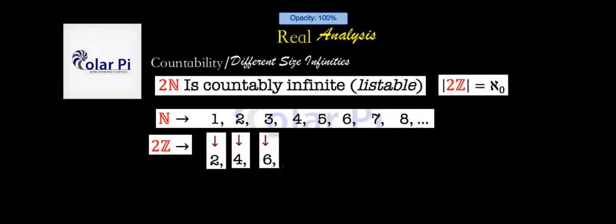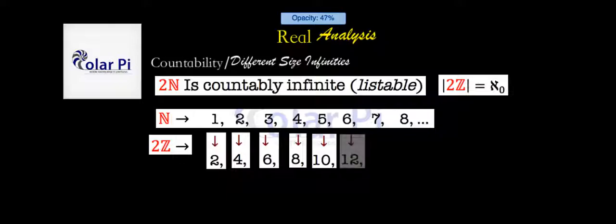Continuing in this fashion, I'm showing that the positive even numbers can be put into one-to-one correspondence with the natural numbers, which is all I have to do to show that the positive even numbers are countably infinite. That is, their cardinality is aleph null.